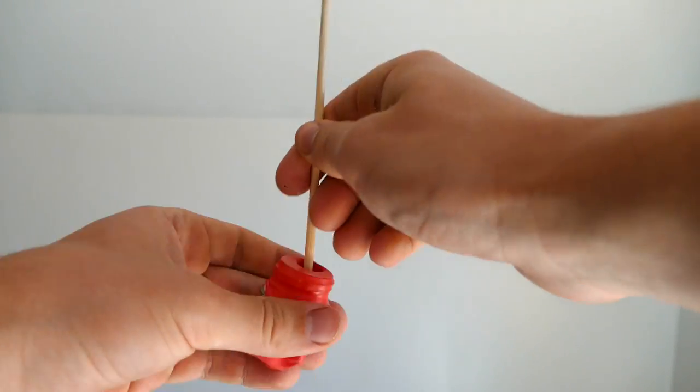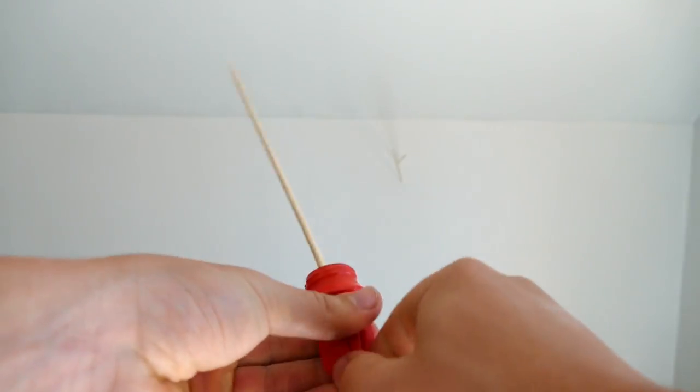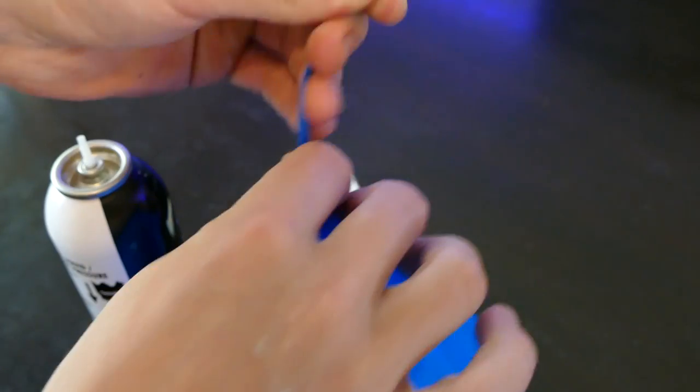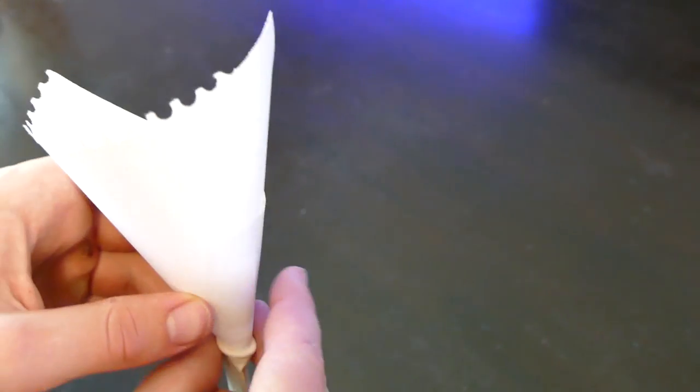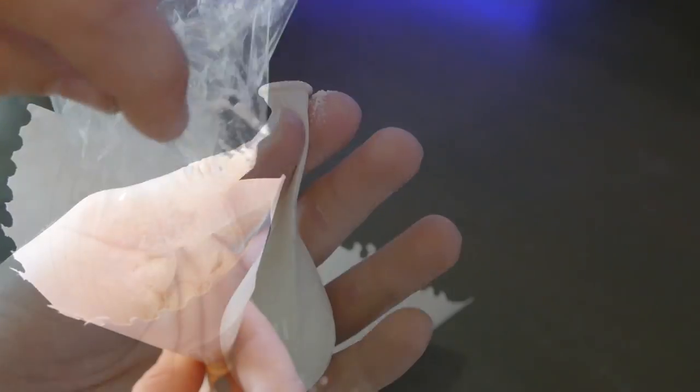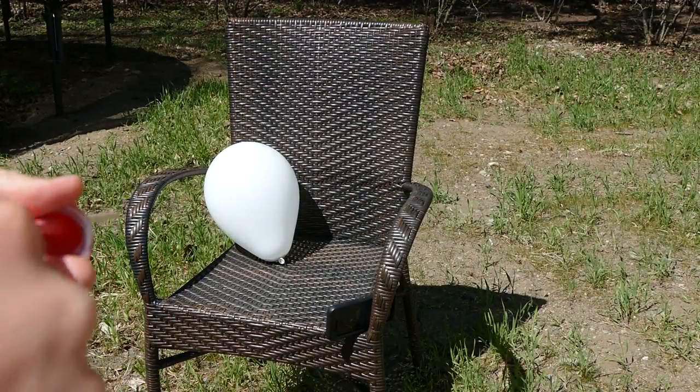Alright now once you've got your cool new slingshot you're probably going to need something to shoot it at. So here's how to make some cool balloon targets. For this first method grab some flour and funnel it into the balloon. Now blow it up and tie it off. When you shoot it it makes a really cool puff when it pops.